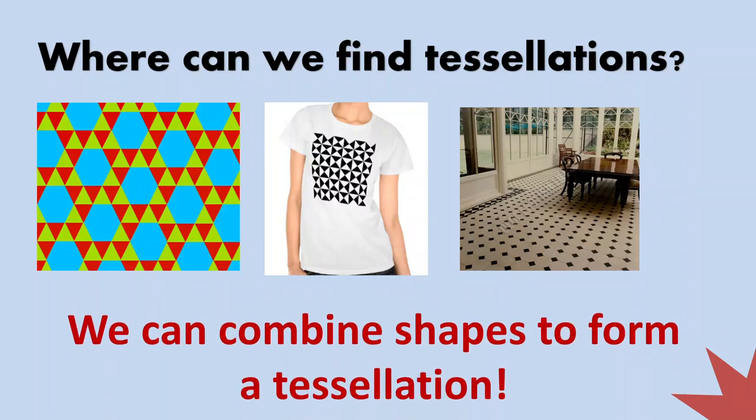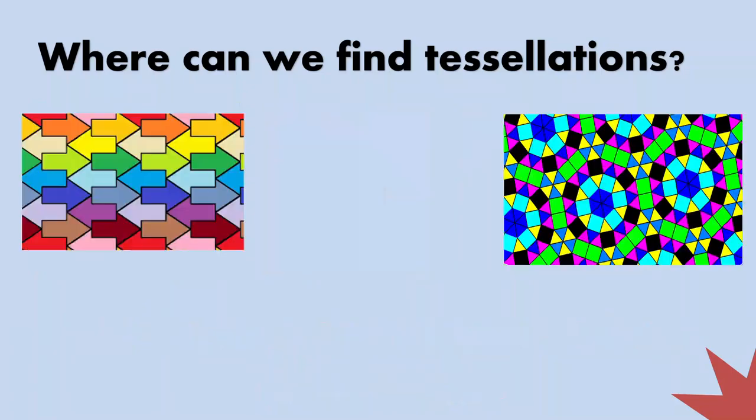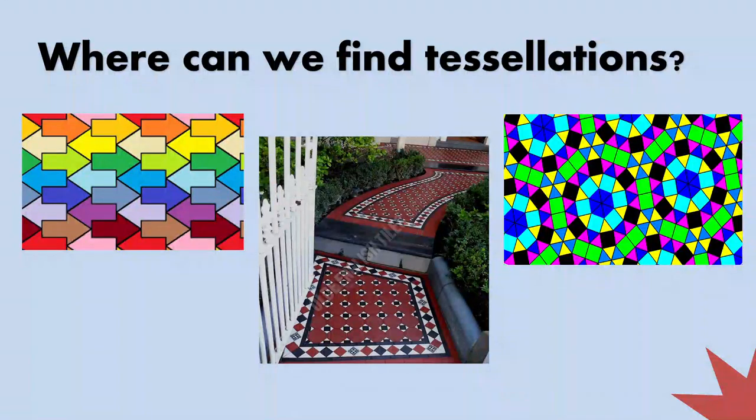We can combine shapes actually to form a tessellation. What about the arrows there? We can use arrows to form a tessellation too. That can be painted on a wall. And the other one that can be found also on a ceiling, the church, or a design. And this one on the pathway. We can combine shapes to form a tessellation.